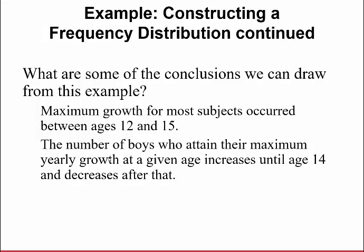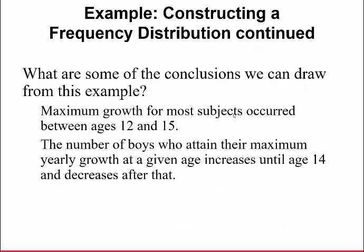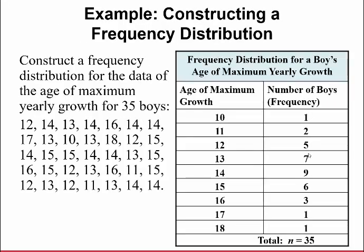What are some conclusions we can draw from this? It looks like maximum growth for most subjects occurred between the ages of 12 and 15. That's where the mass majority of people had their largest growth spurts. And then the number of boys who came to maximum yearly growth at any given age increases until 14, as we saw, and then decreases after that.